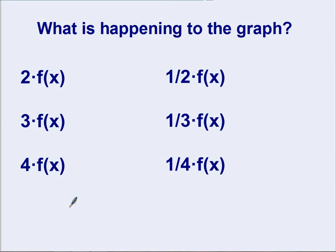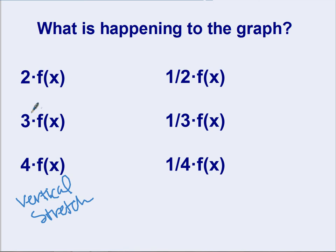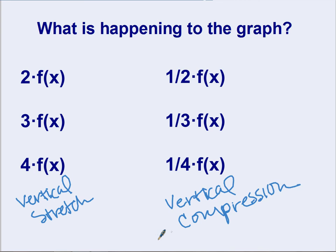So to summarize: if I multiply outside the function by a whole number greater than 1, that's a vertical stretch — I can double, triple, or quadruple all the y values. If I multiply outside by a fraction less than 1, I get a vertical compression — I'm cutting y values in half, or dividing by 3 with 1/3, or by 4 with 1/4.